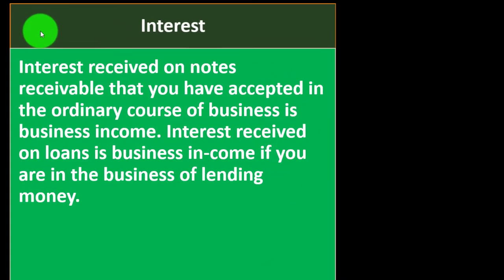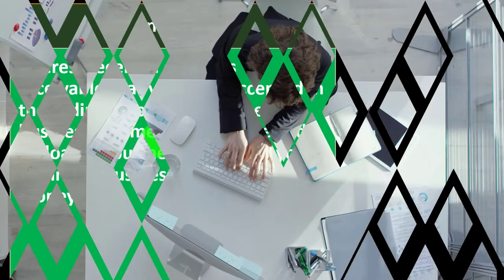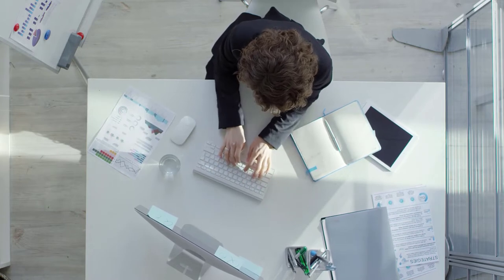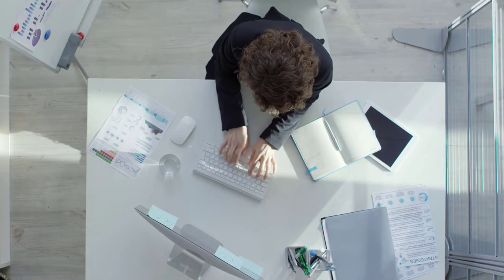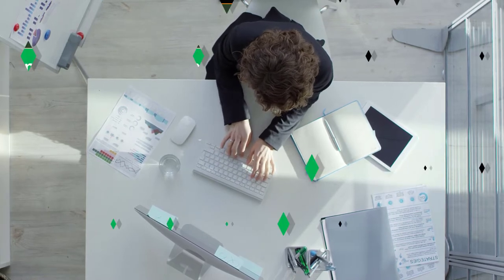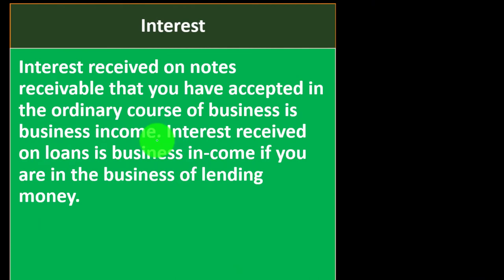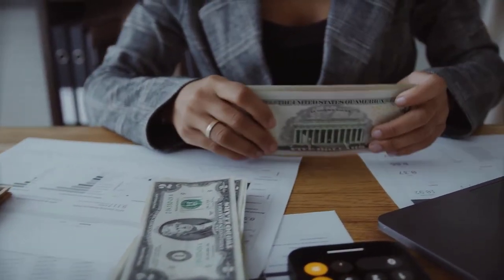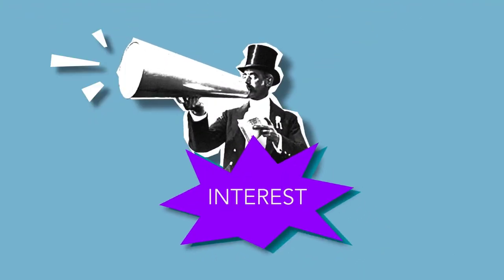For interest, interest received on notes accepted in the ordinary course of business is business income. For example, if you do work and allow a customer to pay over an extended period — say a year — with interest accruing, that interest income from the note is business income. Interest received on loans is also business income if lending money is your business — you're actively the lender, not making a passive investment like buying bonds.